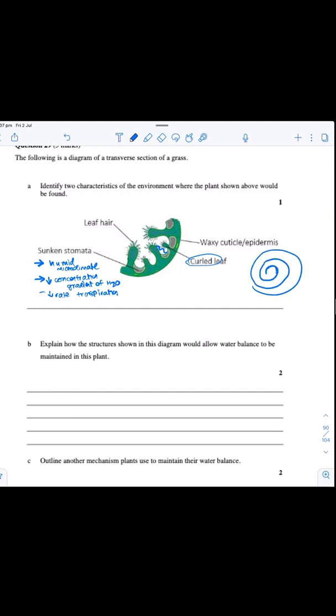But there is a bigger reason. When you have a curled leaf, when water evaporates, Ishan, where does it go? Can it go to the environment, or does it condense on the next layer and then stay as a humid microclimate? Yeah, the second option. Yeah, and guess what that does?